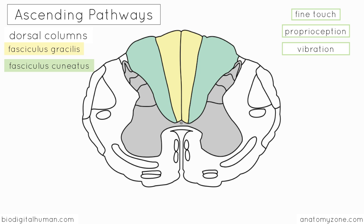The fasciculus gracilis carries information from the lower limb — it has axon fibres from the lower limb — whereas the fasciculus cuneatus has fibres from the upper limb. The way I remember this is that the letter C comes before the letter G in the alphabet, so C is higher, and your upper limbs are higher than your lower limbs. So fasciculus cuneatus carries fibres from the upper limb, whereas fasciculus gracilis carries fibres from the lower limb.